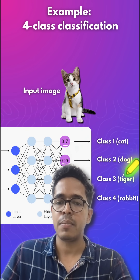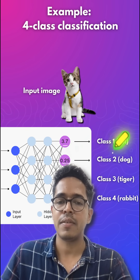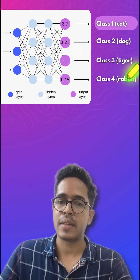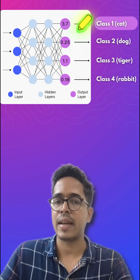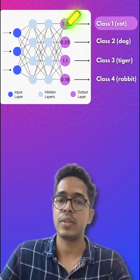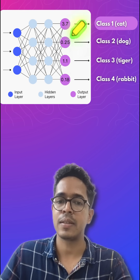These are just numbers, and you can say that whichever number is the greatest, you can say it's a cat, or it's a dog, tiger, rabbit, etc. So in this case it's a cat because the number associated with cat is the biggest.